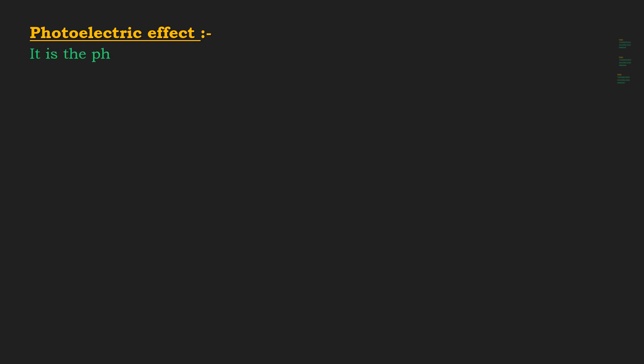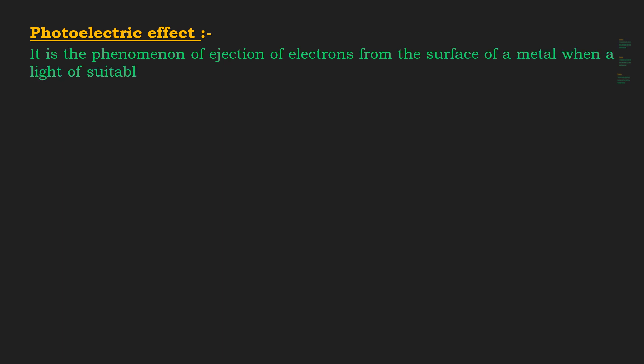After black body radiations, let's discuss photoelectric effect. It was given by H. Hertz in 1887. It is the phenomenon of ejection of electrons from the surface of a metal when light of suitable frequency strikes or falls on it. The emitted electrons are called photoelectrons.